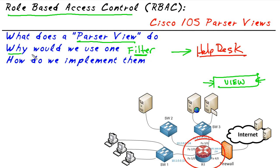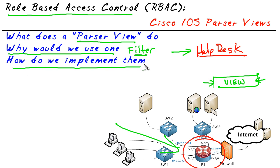Why would we use one? We would use them to set up role-based access control. And although we could tie this into a AAA server and make it very elaborate, we can do the entire thing right here on the local router itself. I'd like to walk you through step-by-step implementing a simple parser view to implement role-based access control.